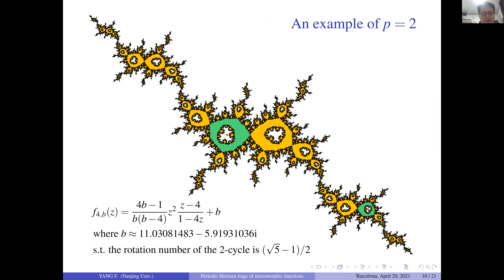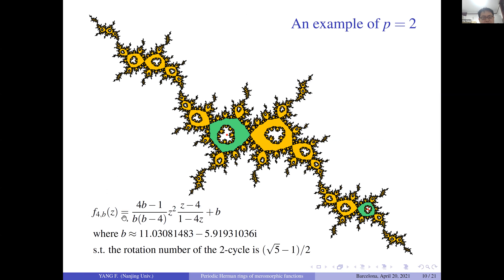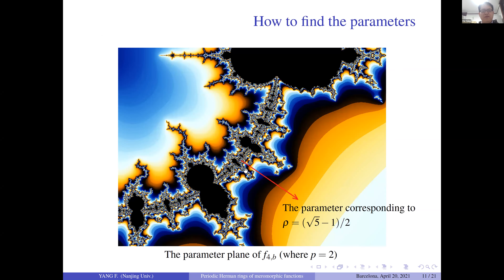There is an example of a cubic rational map having a two-cycle of Herman rings — the green part is the Herman ring. To find the parameters, since the period is two, we write the formula and find B such that it has a Herman ring. The parameter corresponding to the golden mean can be found. If you want to find other rotation numbers, you look at this picture and zoom in to find the corresponding parameter.